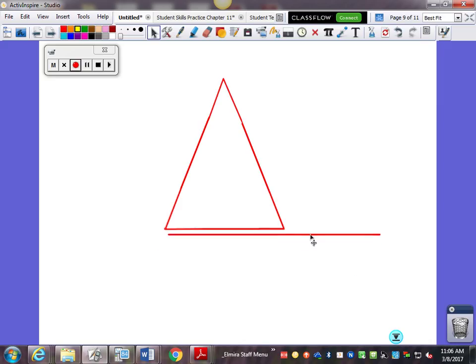And if I extend any one side of the triangle, it creates an angle on the outside, and we call this an exterior angle.